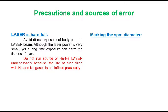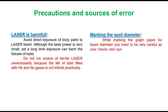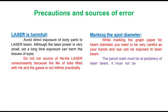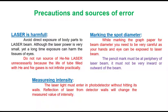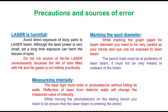In the marking of spot diameter, while marking the graph paper for the beam diameter, you need to be very careful as your hands and eyes can be exposed to the laser beam. And the pencil mark must be at the periphery of the laser beam. It must not be very inward or outward of the beam. Now, while measuring intensity of the laser beam, the laser light must enter in the photo detector without hitting its walls. Because reflection of laser from the detector walls will change the measured value of the intensity. And while moving the photo detector on the sliding bench, you need to be ensured that the laser beam is entering in the detector hole.